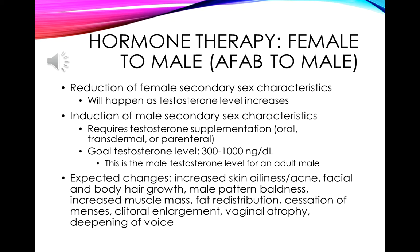If the patient was female at birth and is transitioning to male, the first goal is to reduce female secondary sex characteristics, which will happen naturally as testosterone levels increase — so we don't need to block estrogen. We do need to induce male secondary sex characteristics, which requires testosterone supplementation, given orally, transdermally, or parenterally via injection. The goal is to get total testosterone between 300 and 1,000, equivalent to normal adult male levels. Expected changes include skin oiliness, acne, facial and body hair growth, fat redistribution, cessation of menstruation, clitoral enlargement, vaginal atrophy, and deepening of the voice.